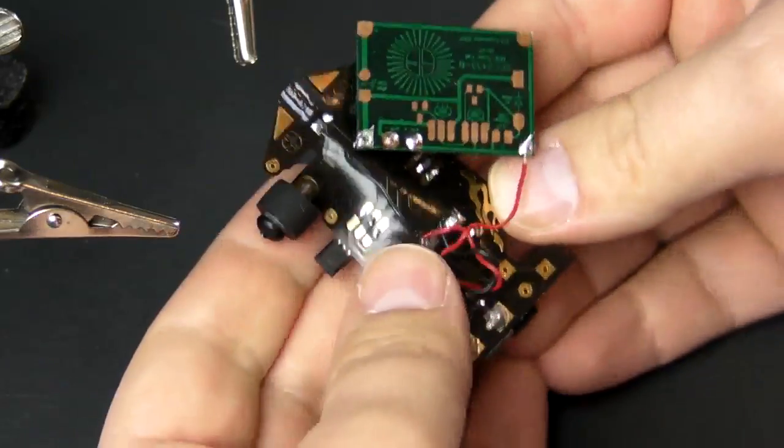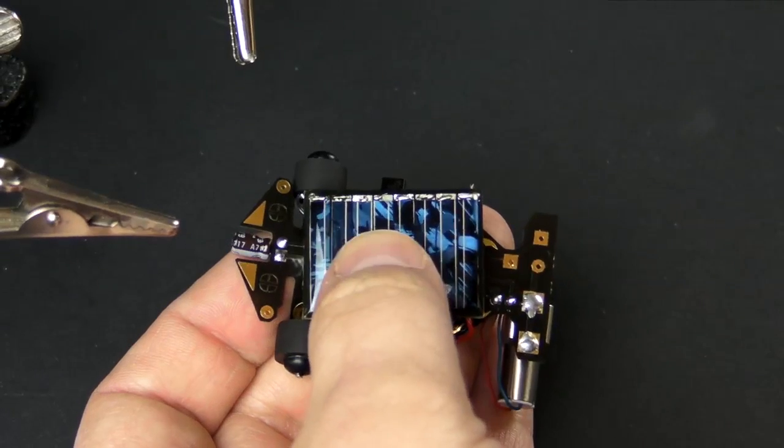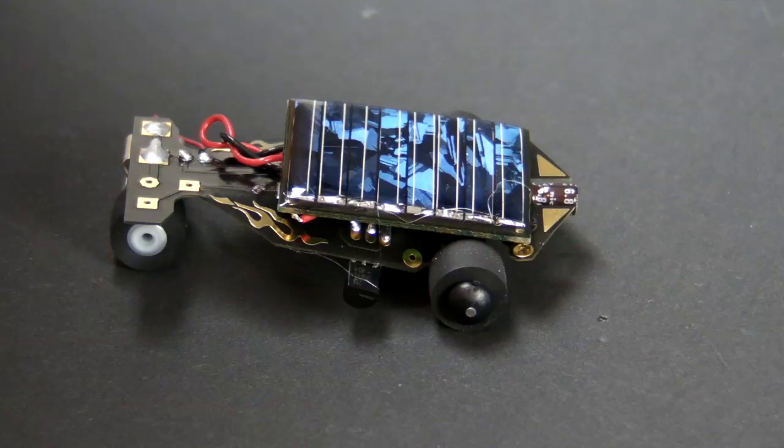All that's left to do is add some double sided tape. I'm all done with the Solar Speeder kit from the Maker Shed. Now let's charge it up and see how it goes. It hasn't been charged yet so it might take a minute or two.